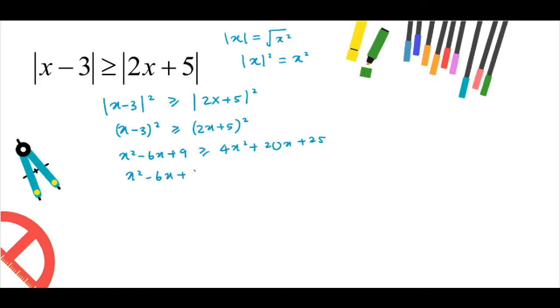In order to solve this quadratic inequality, bring 4x squared plus 20x plus 25 to the left hand side and simplify it, and it will give me minus 3x squared minus 26x minus 16 greater than or equals to 0.